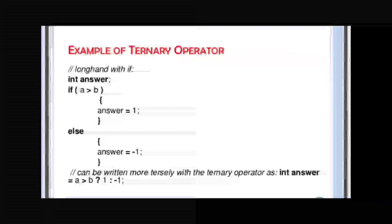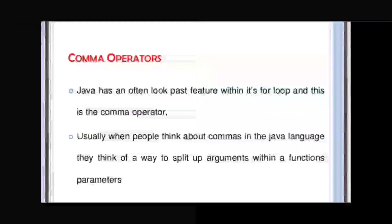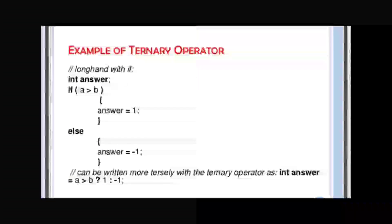Look at the example. We take a variable called 'answer'. If a is greater than b and that is true, then answer = 1; if not true, then answer = -1. Now to convert this to ternary: write expression 1 (the condition: a > b), then put a question mark, then write expression 2 (a < b), then put a colon, then put expression 3. Whichever of the two is true will be the correct answer. Follow this syntax — it is very interesting to learn, and the programs built with it are quite easy and interesting.